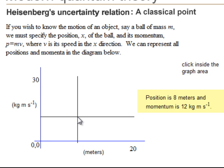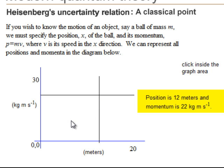Click inside the graph. The coordinates give position and momentum simultaneously for a classical particle.